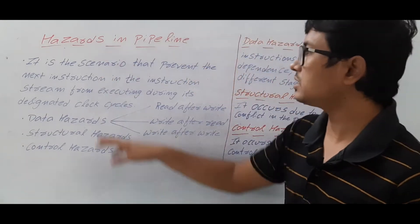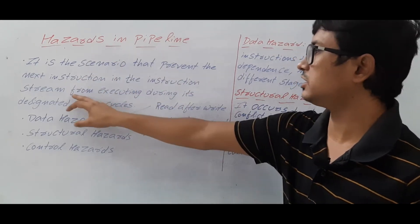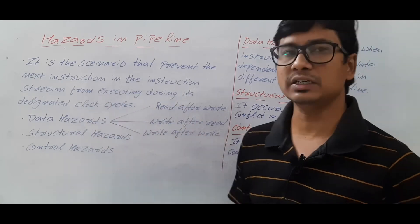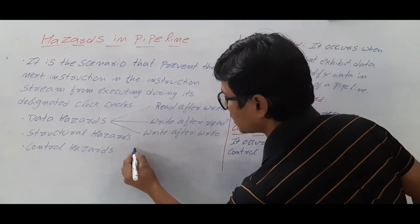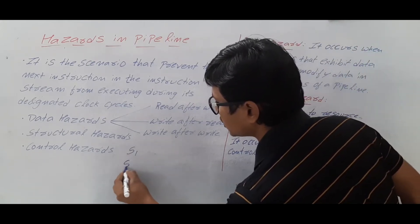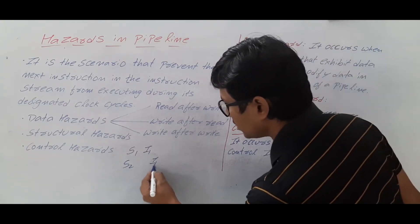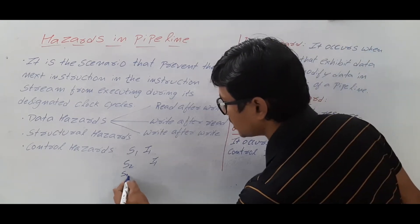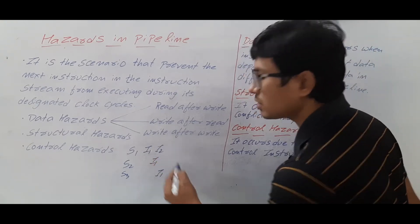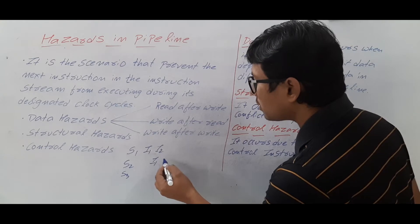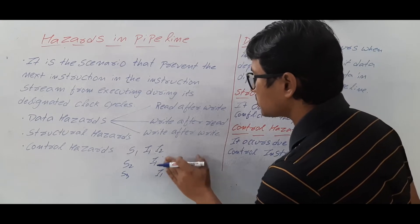What is a hazard? A hazard is the scenario that prevents the next instruction in the instruction stream from executing during its designed clock cycles. For example, in a pipeline with stages one, two, and three, if instruction one is executing in each stage, then instruction two has to execute next — but due to some problem it cannot execute where it was supposed to.